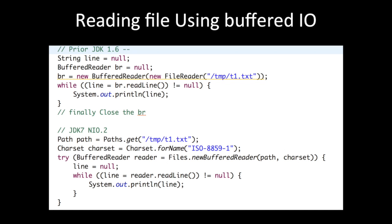In JDK 1.6, if we want to read a file using buffered I/O, we used to create a new BufferedReader. In JDK7 NIO2 version, we use Files.newBufferedReader() and provide the path.